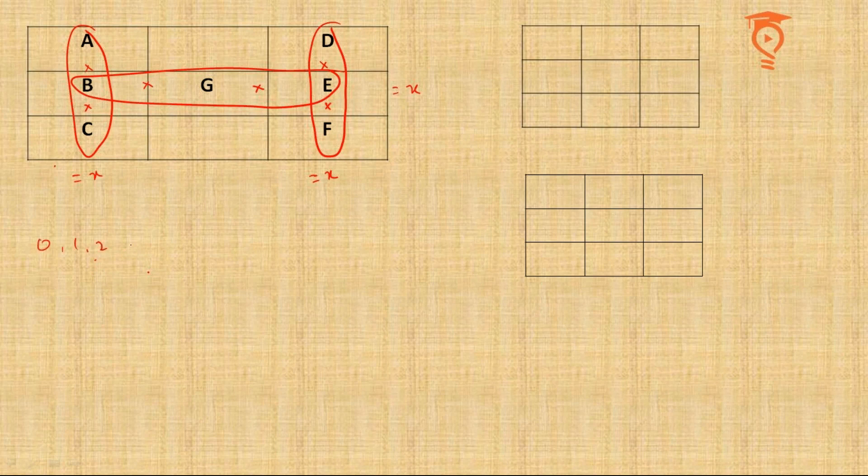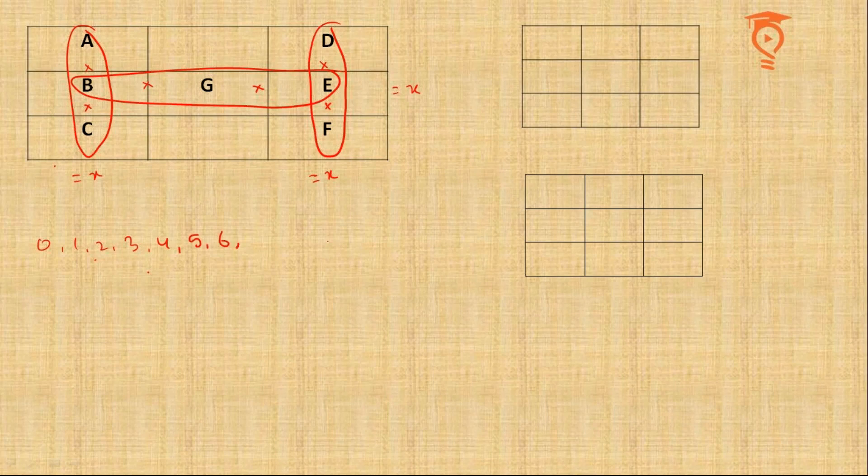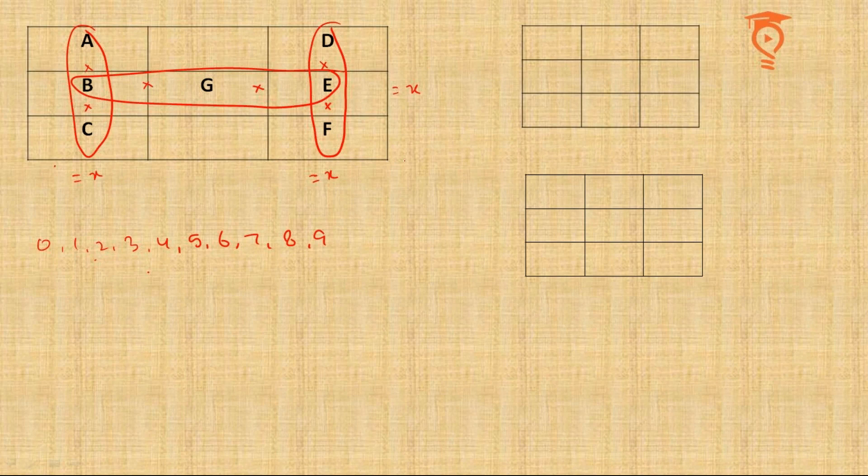We have 10 digits: 0, 1, 2, 3, 4, 5, 6, 7, 8, and 9. But in the table we have only 7 places, only 7 letters represent different digits out of these 10. Let us figure out which three digits are not there.